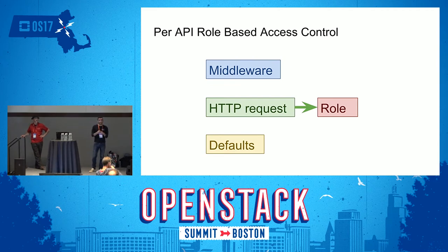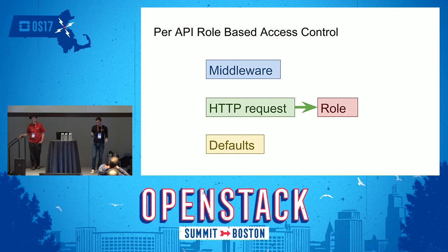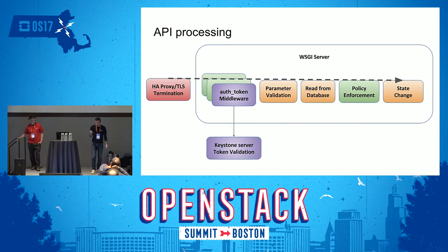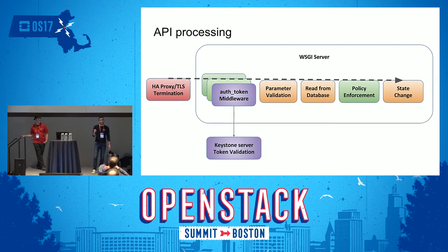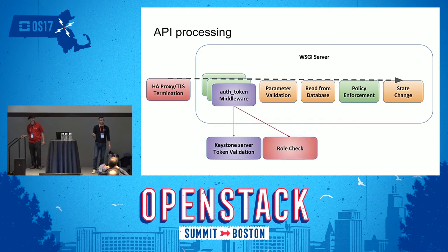We want to do a role check in the middleware such that an HTTP request is allowed only if the token the user presents has that role. We also want defaults so that if there is no clear rule for this API, there's a catch-all default for the call. This will be done in the auth token middleware. Right now the auth token middleware just does Keystone server token validation, and during validation the middleware gets back the list of roles that the token has on a project.